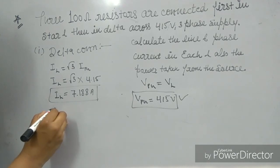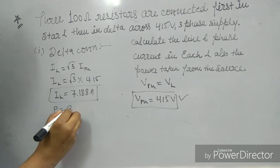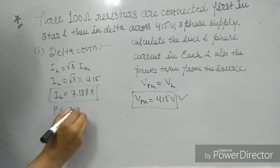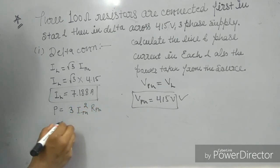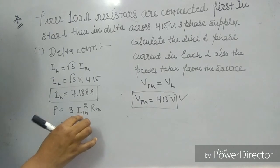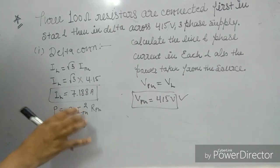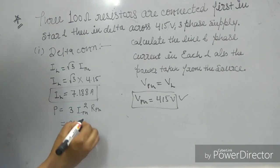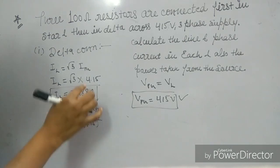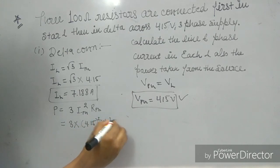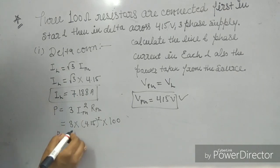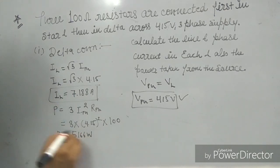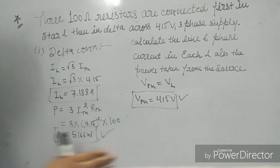Now we will find the value of power. P equals 3 times IPH squared times RPH, which is 3 into 4.15 squared into 100, giving P equal to 5166 watt. You can verify this with a calculator. Thank you friends. If you have any problem, let me know.